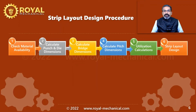Step one is to check if the material is available. Step two is to calculate the punch and die dimensions. Step three is to calculate the bridge dimensions. Step four is to calculate the pitch dimension. Step five is to calculate the utilization. Step six is to complete the strip layout design.